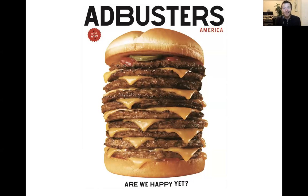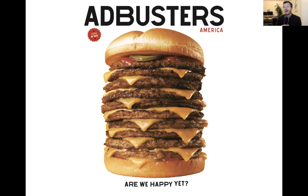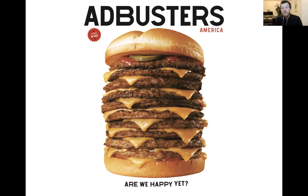McDonald's was always an easy target for Ad Busters and for anyone else engaged in culture jamming — they've been one of the primary targets. McDonald's historically sent messages featuring images of healthy eating, family time spent together, a rich cultural social fabric — all of which runs contrary to what McDonald's really serves up. They're also the biggest restaurant chain doing this, so they've served as a pretty easy target. Ad Busters has taken aim more than once at McDonald's.